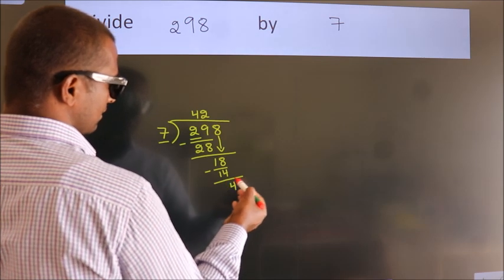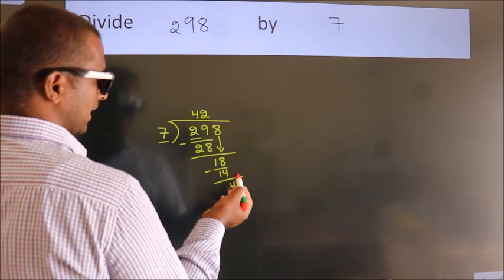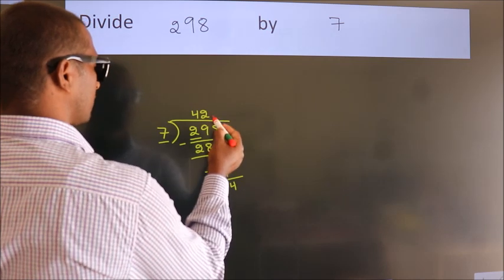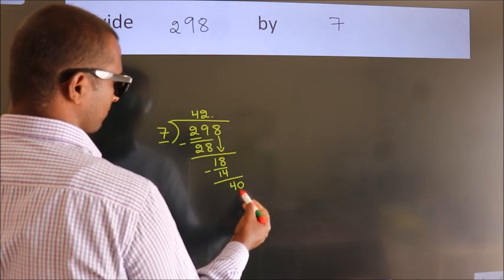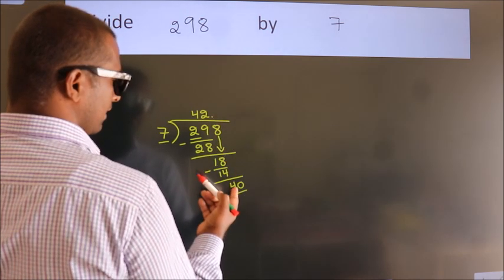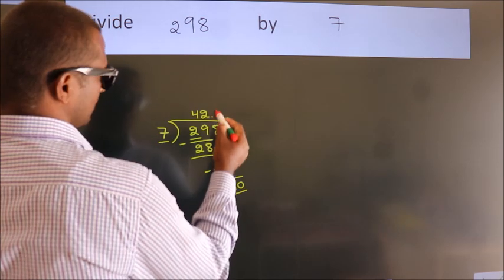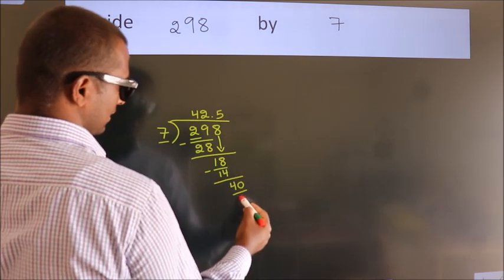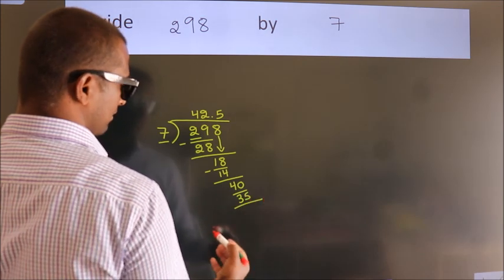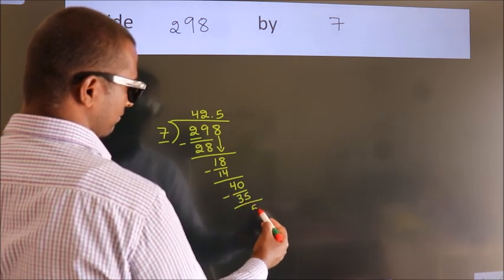After this, no more numbers to bring down. So what we do is, we put a dot and take 0. So 40. A number close to 40 in the 7 table is 7 fives, 35. Now we subtract. We get 5.